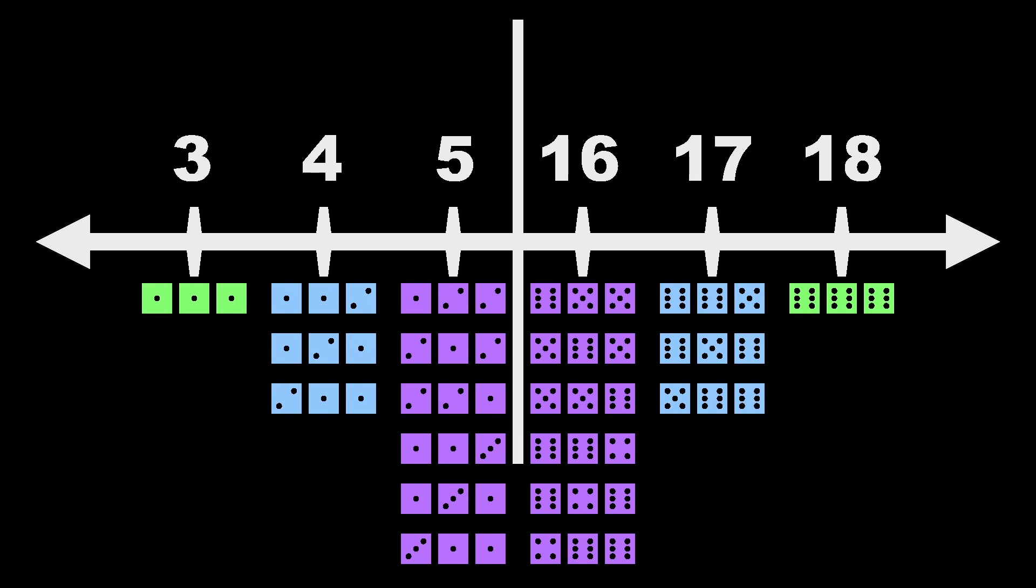This means that our distribution is symmetric about its center. For example, there's one way to roll both 3 and 18, and three ways to roll both 4 and 17, which means that any number that is a certain distance away from our minimum value of 3 will be able to be rolled in the exact same number of ways as whatever number is equally as far from our maximum value of 18.